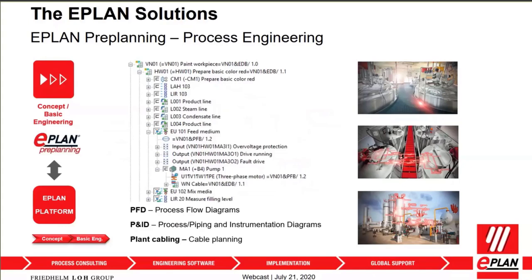Today many users use Excel sheets to capture instrumentation, actuators, and sensors. However, Excel is not a structuring tool — it's just a capturing tool. If you want to see how many items you have in a specific section, you have to use filters and sorting. In preplanning, you have a clear view of how your system or plant is organized, and you can capture different structures and objects in a very organized fashion so you can easily recognize, find, and work with them.